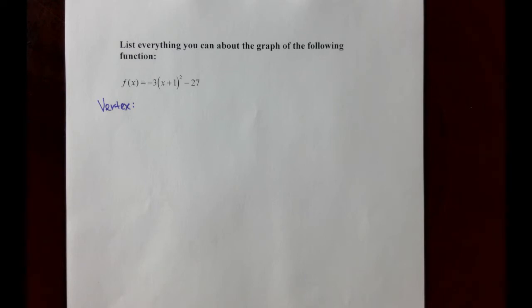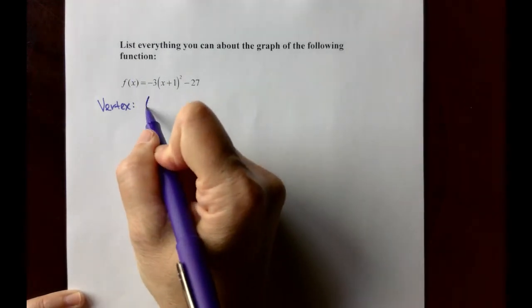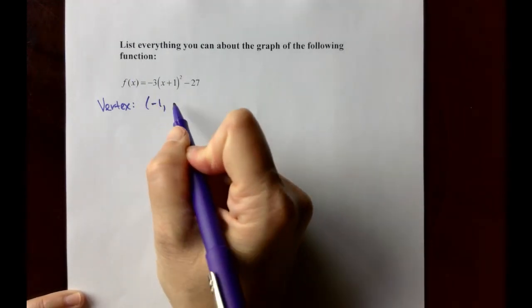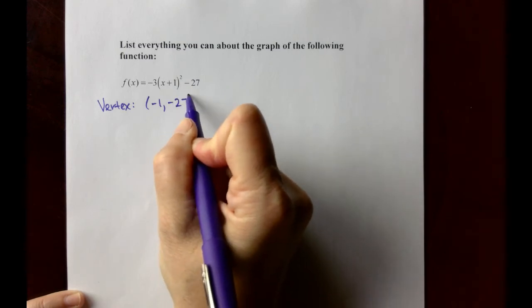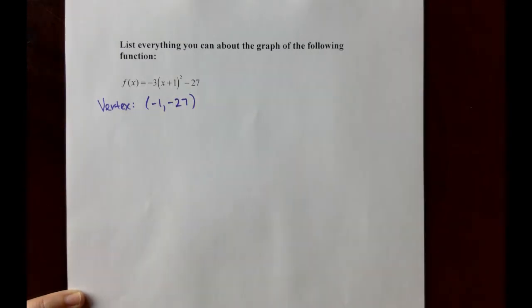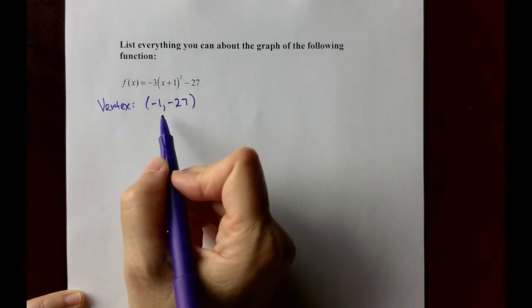I'm hoping that you'll recognize that this thing should graph as a parabola and it's written already in vertex form. We can identify the vertex from our function as negative 1, negative 27.